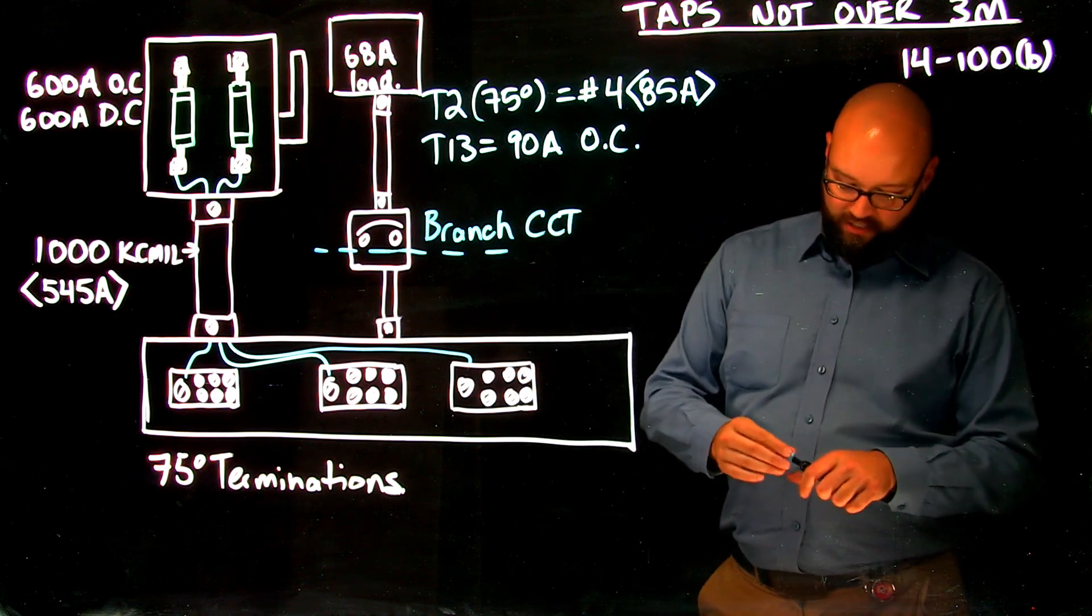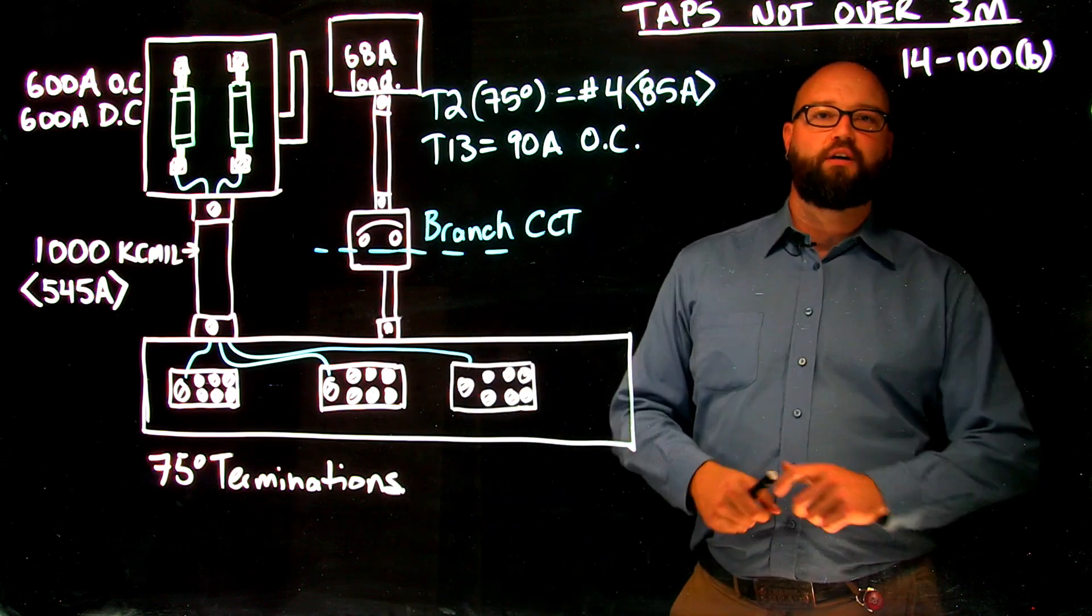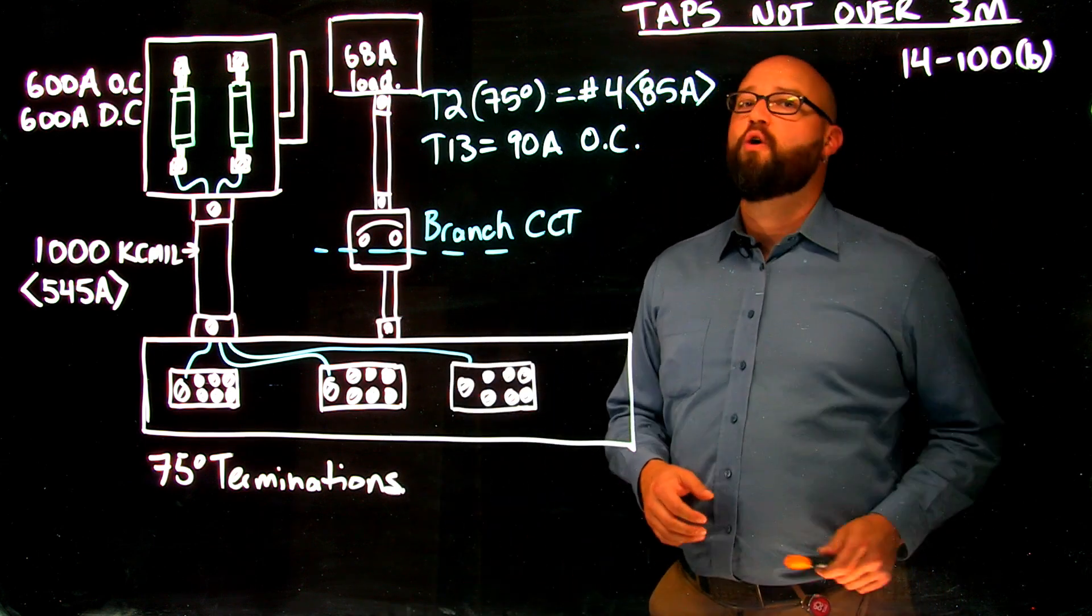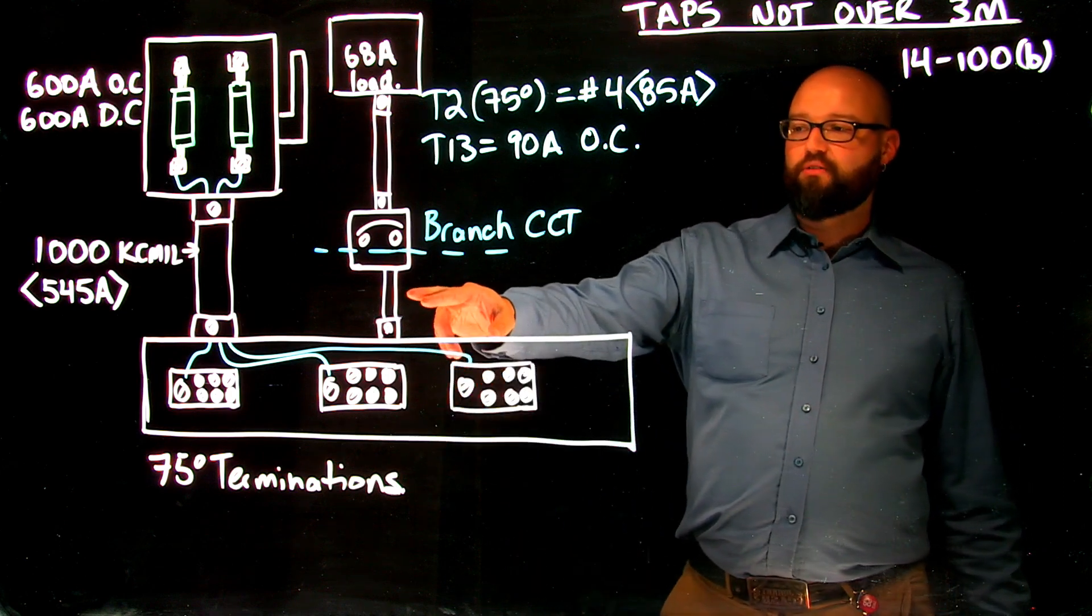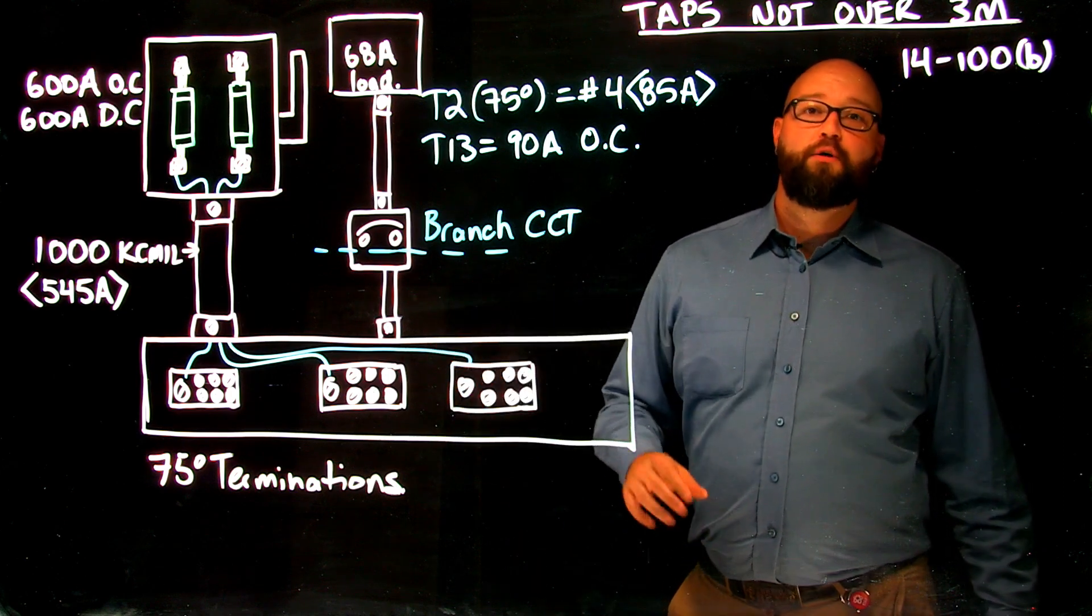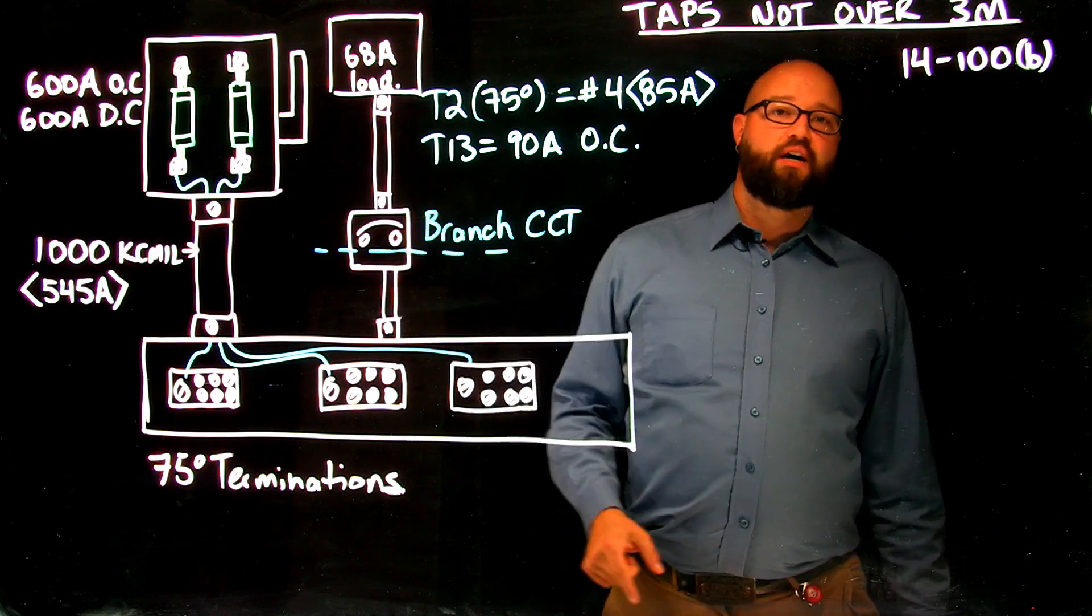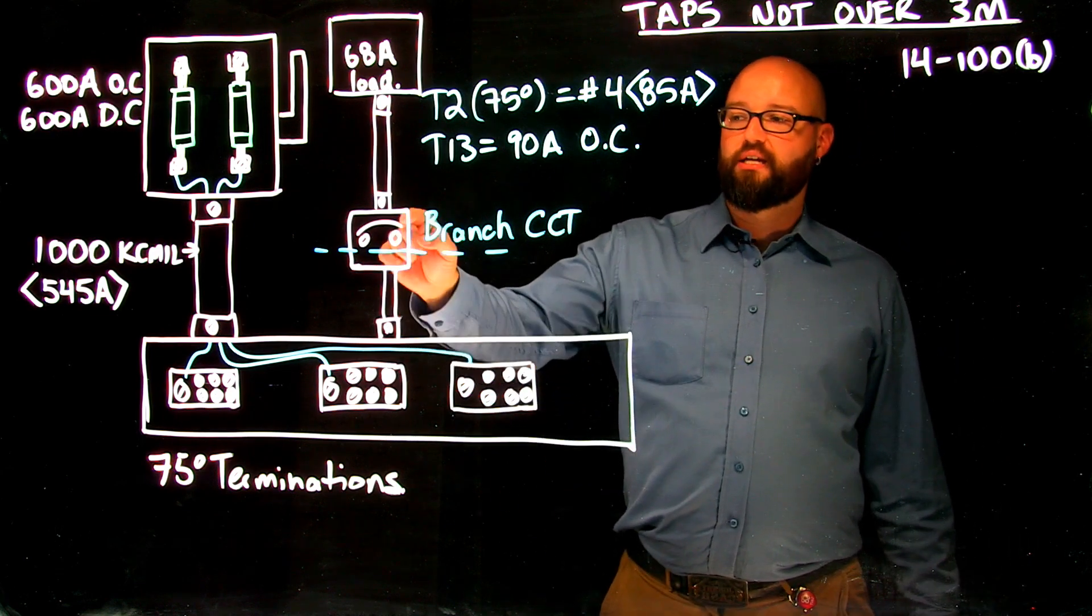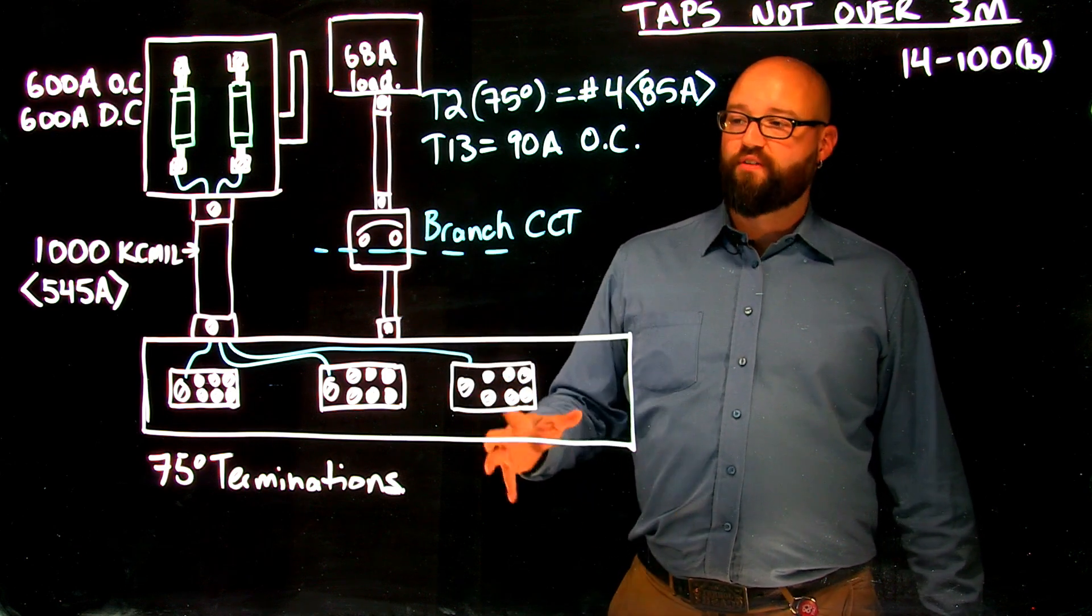Past this point, past our branch circuit, this is where we take a look at our tap conductor calculation. So 14100 item B tells me that I'm allowed to downsize this conductor provided that, first of all, my conductor cannot have an ampacity less than the overcurrent that it supplies. So right off the bat, we have a 90 amp overcurrent that tells me that I need to go to table two and select a conductor with an ampacity greater than that 90 amp overcurrent.